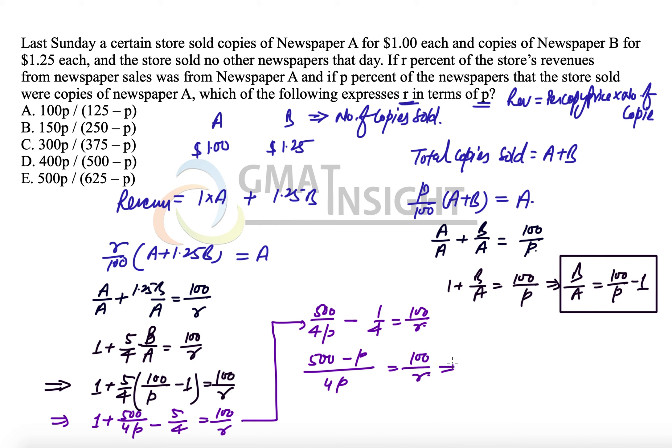Let's take R on one side and everything else on the other. It becomes 4P divided by 500 minus P times 100. R finally becomes 400P divided by 500 minus P. Let's check which option gives us the same expression. 400P over 500 minus P is option D. Therefore option D is our correct answer.